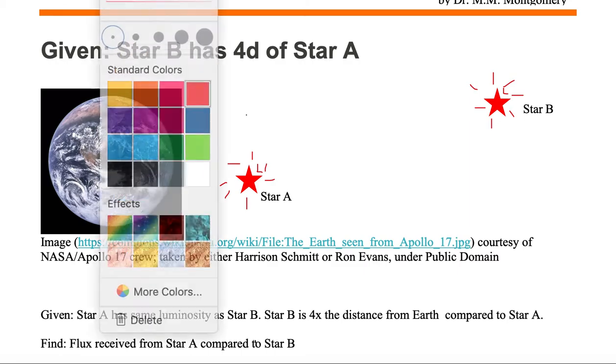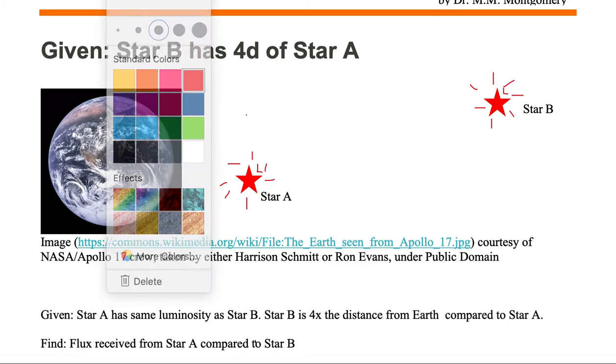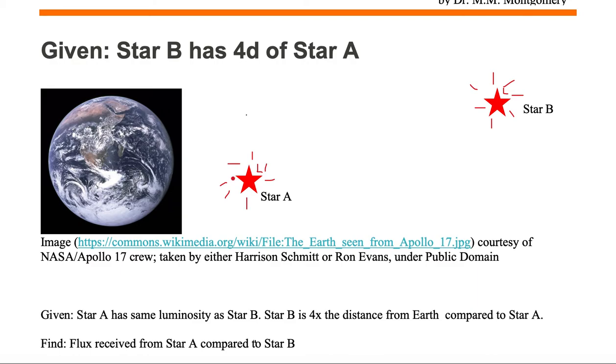However, we have two stars at different distances. We want to find out the flux that's received in one square meter on the surface of the Earth, and that would be called the flux of A.